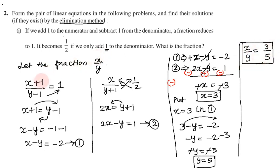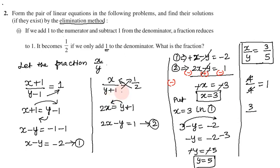Now let's check: add 1 to the numerator gives 3+1=4, subtract 1 from the denominator gives 5-1=4, so 4/4 = 1. For the second condition: numerator is 3, denominator is 5+1=6, so 3/6 = 1/2. The answer is correct.